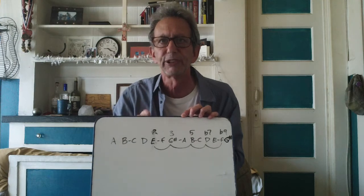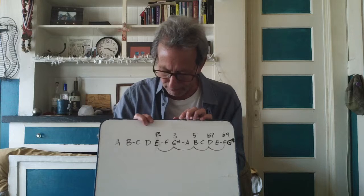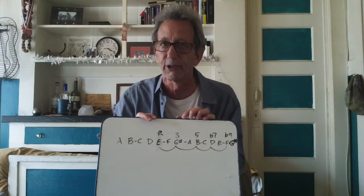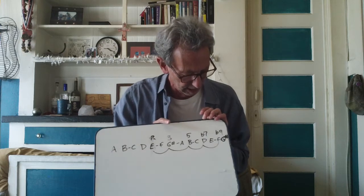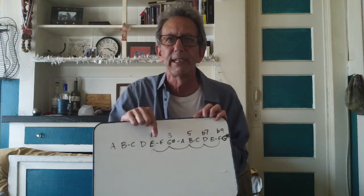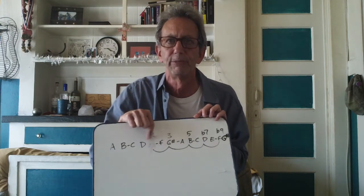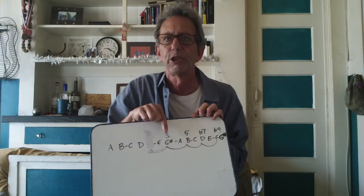So E7 flat nine is a great chord — very dissonant, but it does its job well. The notes are E, G sharp, B, D, F. Now if I were to take this root and remove it, I get G sharp, B, D, F — and there is the diminished seventh chord. You can see why it couldn't have existed in the Greek modes, because we need that one little tweaked note to create it.